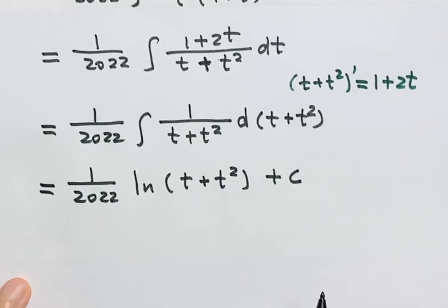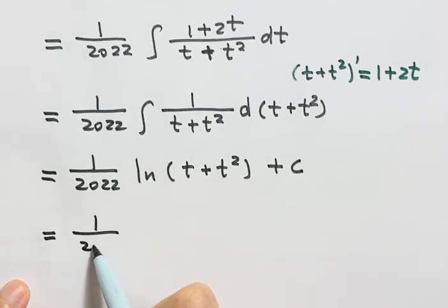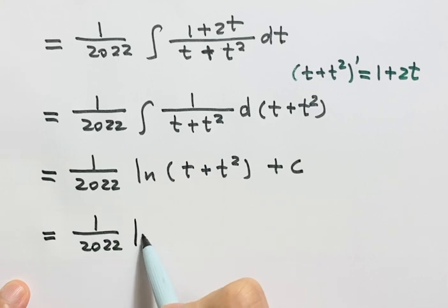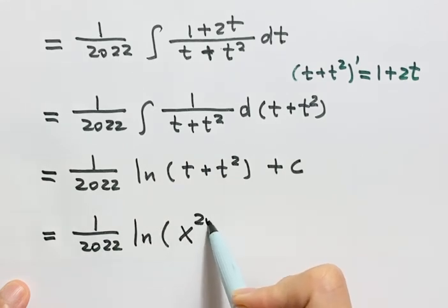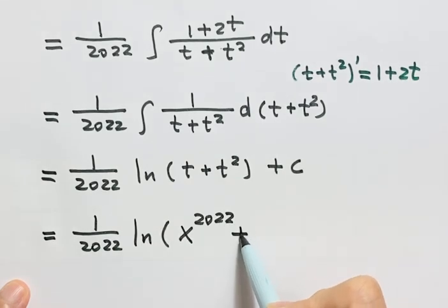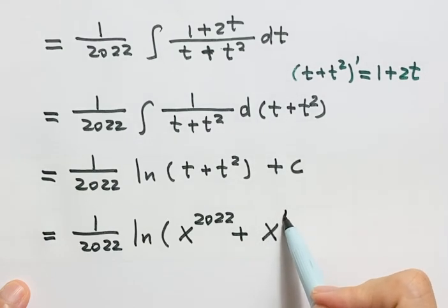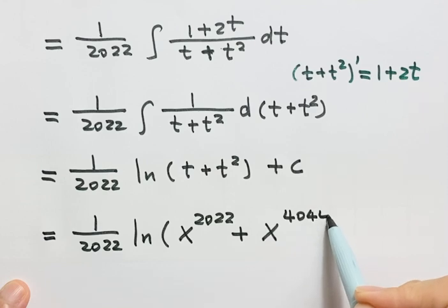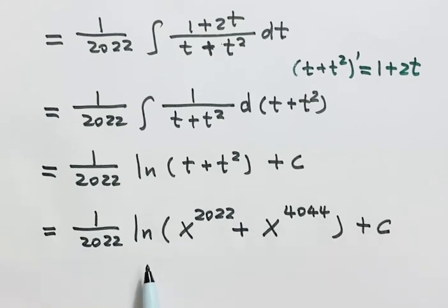Then we need to back-substitute. Recall that t equals x to the power 2022, and t squared equals x to the power 2022 times 2, which is x to the power 4044. So the final answer is log of x to the power 2022 plus x to the power 4044, plus C.